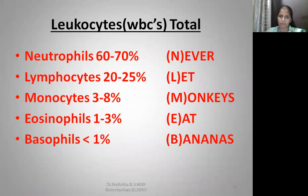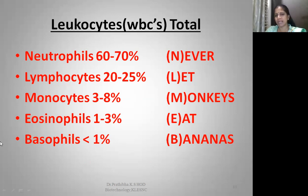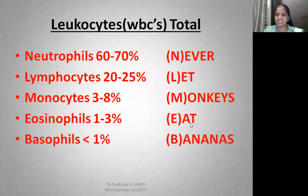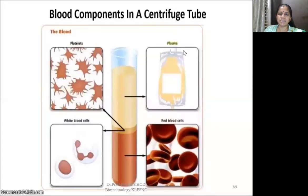The different concentrations of WBCs are: neutrophils 60 to 70 percent, lymphocytes 20 to 25 percent, monocytes 3 to 8 percent, eosinophils 1 to 3 percent, and basophils about 1 percent. A helpful mnemonic to remember these is: 'Never Let Monkeys Eat Bananas' — N for neutrophils, L for lymphocytes, M for monocytes, E for eosinophils, B for basophils.